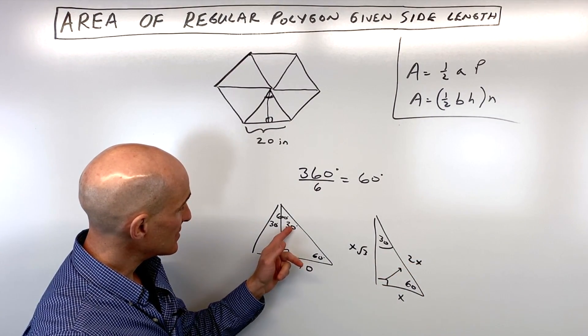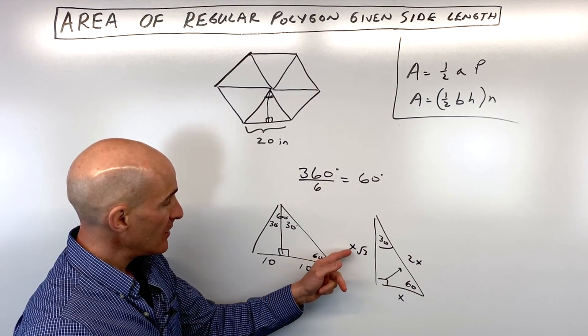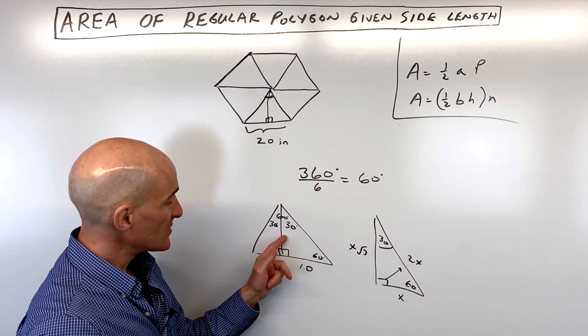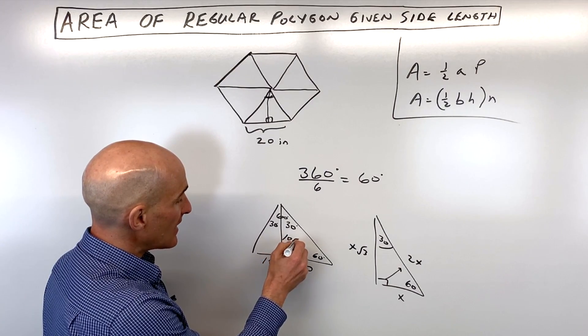So here you can see that this is across from the 30 degree angle, that's our x side, which is 10. The longer leg, the one across from the 60 degree angle, is 10 times the square root of three.